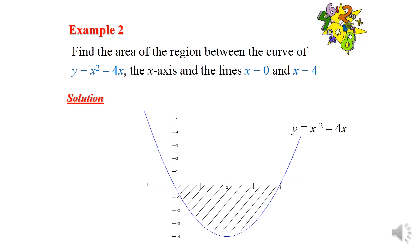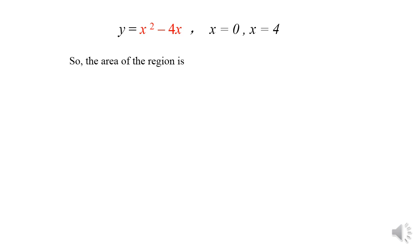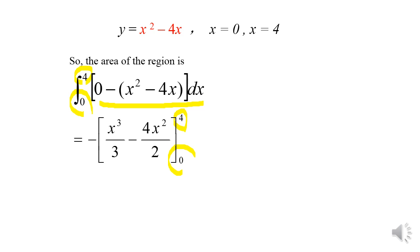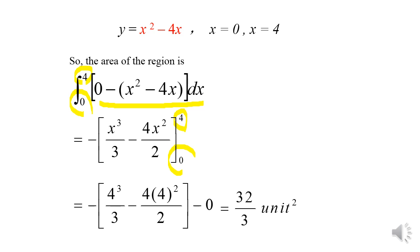Example 2: Find the area of the region between the curve y = x² minus 4x, the x-axis, and the lines x = 0 and x = 4. Since the region is below the x-axis, we integrate (0 minus (x² minus 4x)) dx from 0 to 4. This gives negative x³/3 minus 4x²/2 evaluated from 0 to 4, with the answer 32/3 square units.